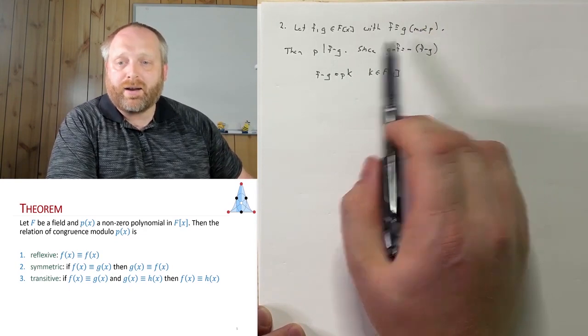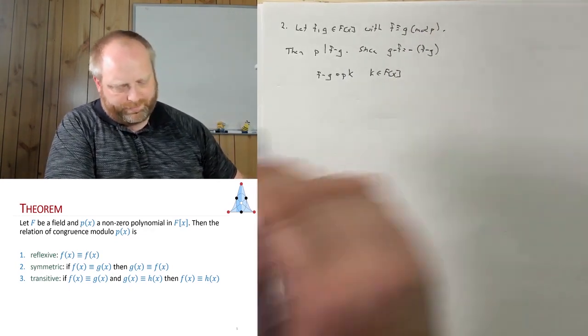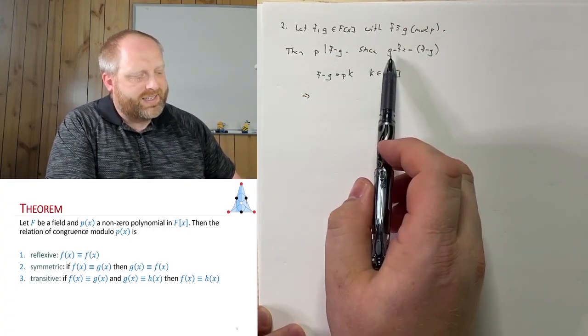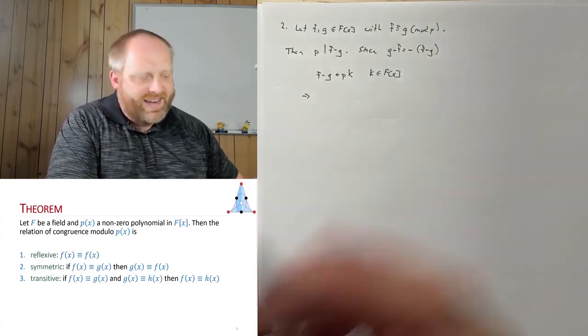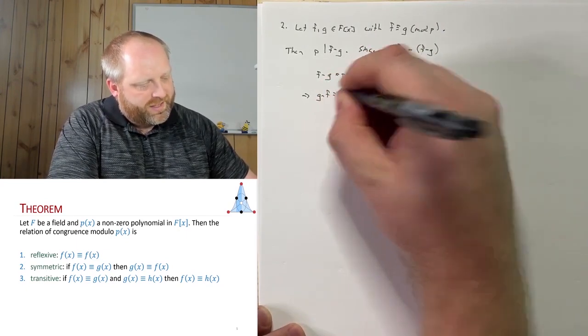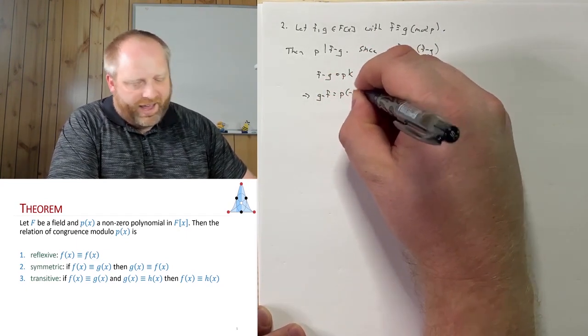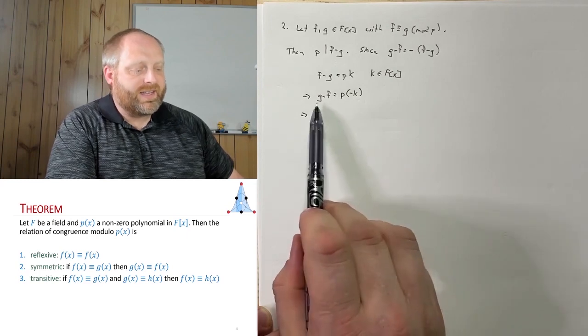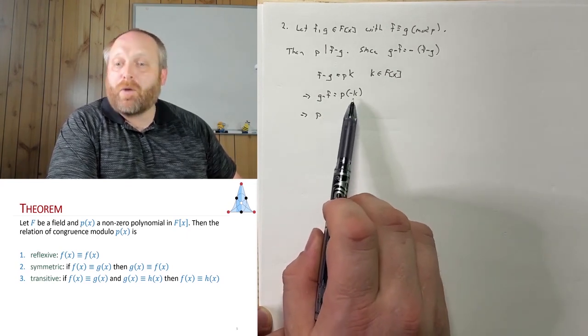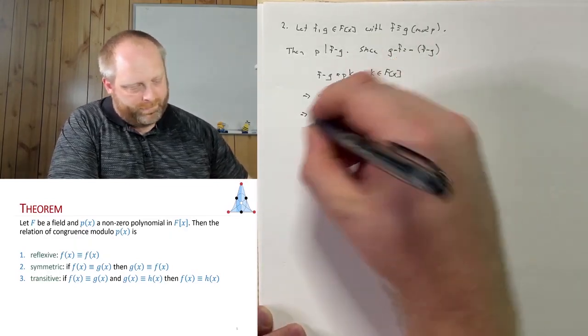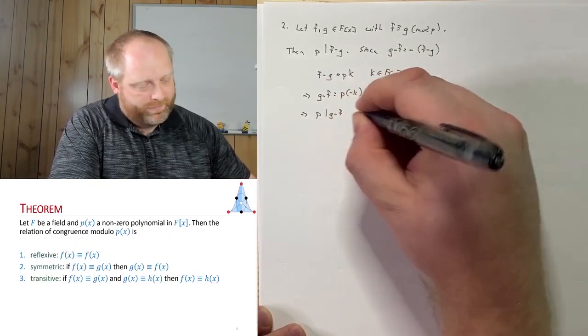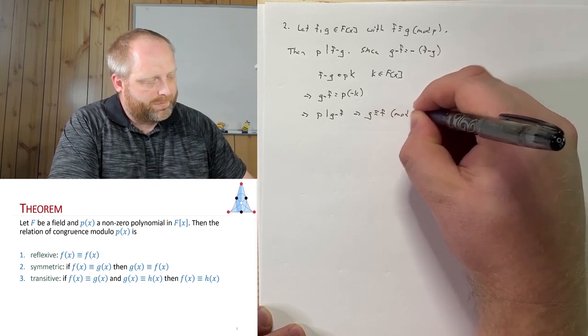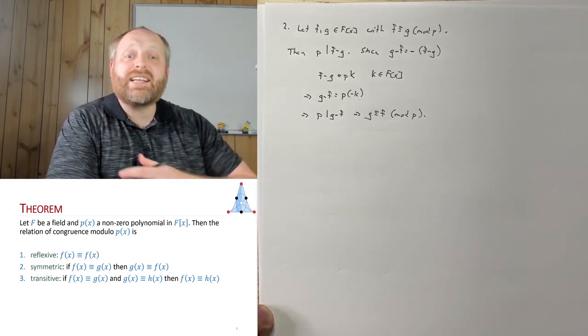So what do we get from here? We get that f minus g is equal to some pk, where k is an element of F[x], right from the divisibility part of this. Now, I know f minus g, I could just rewrite this as g minus f, but I'm going to have that negative here. So I'm going to bring the negative to the other side. So this is going to be p times negative k. So this tells me that the difference between g and f is again a multiple of p. So this tells me that p divides g minus f, which implies that g is equivalent to f mod p. So that's the symmetric property.